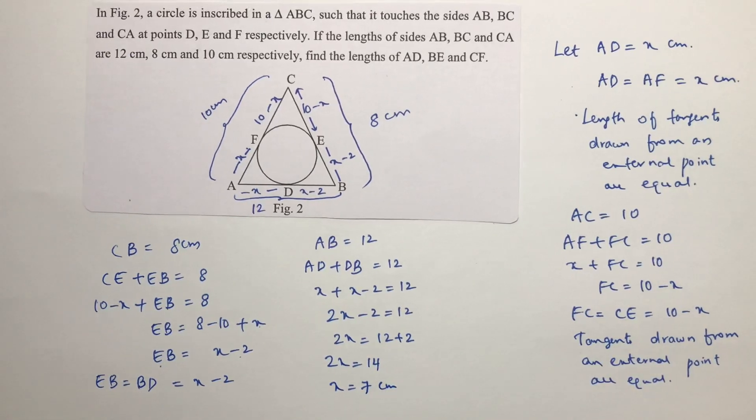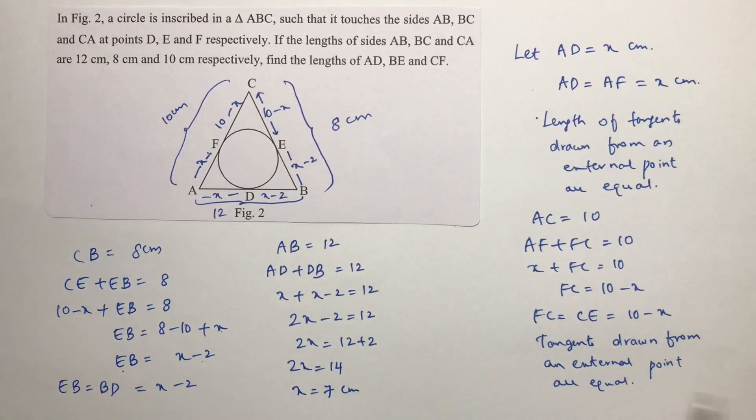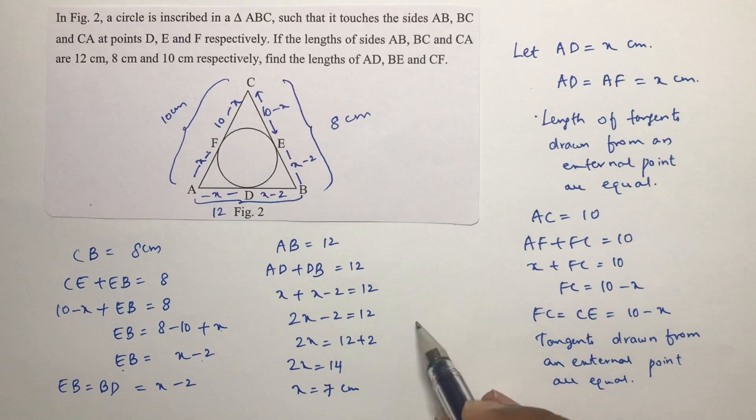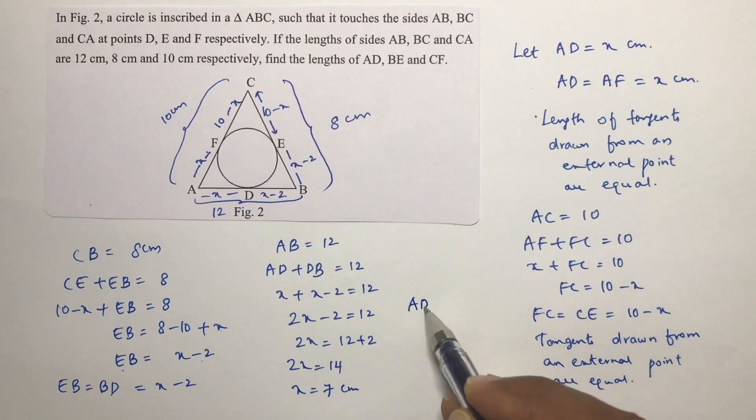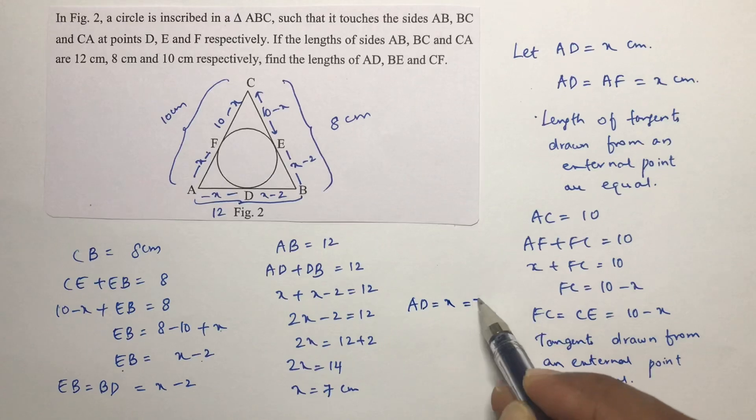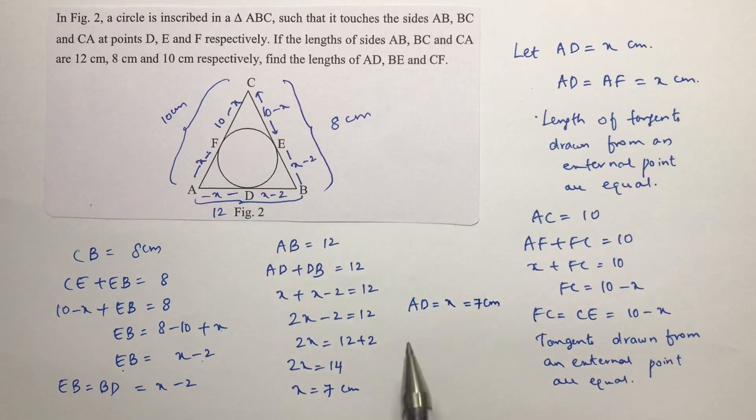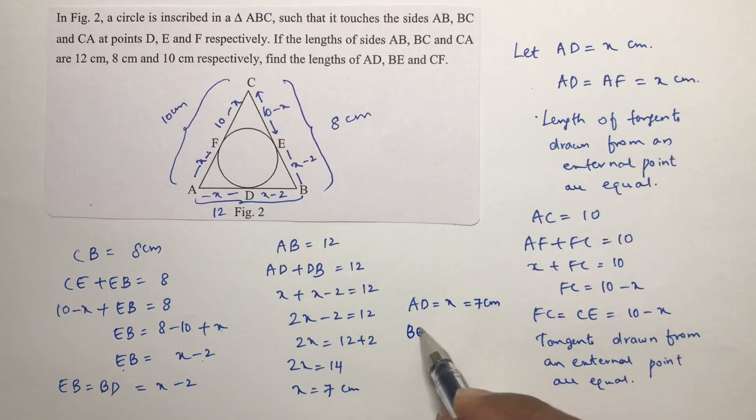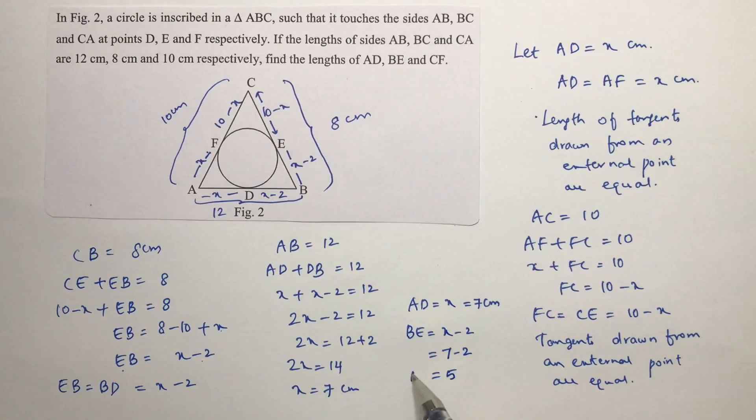So if we will see the diagram now, AD we need to find. AD is nothing but x which is nothing but 7 centimeters. Next we need BE. BE is x minus 2, so 7 minus 2 which is nothing but 5. So BE is 5.